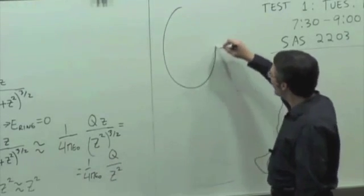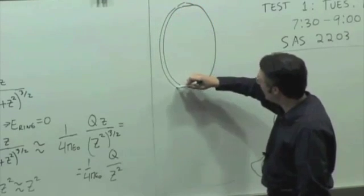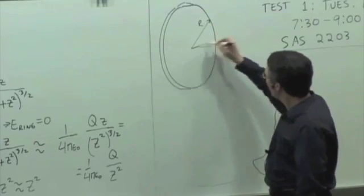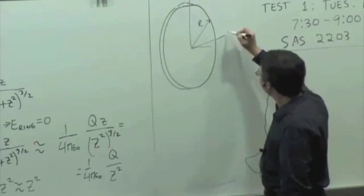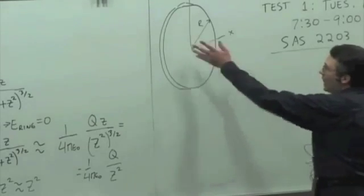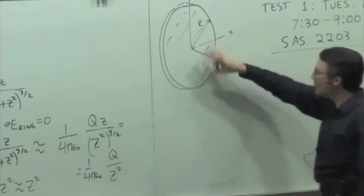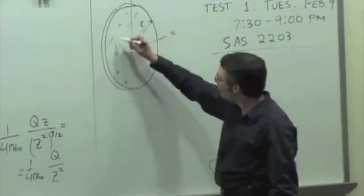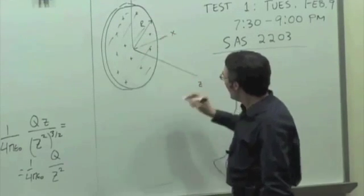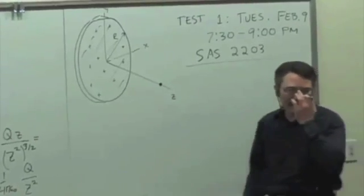Let's say you have a circular disk — a piece of plastic or something like that — and it has a radius. We're putting it in the x-y plane, with z coming out. Only now it's solid. It's a solid disk, and it has a uniform, positive charge spread over the entire surface. We want to calculate the magnitude of the electric field at some location on the z-axis.